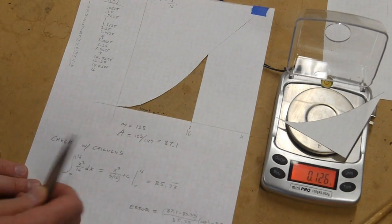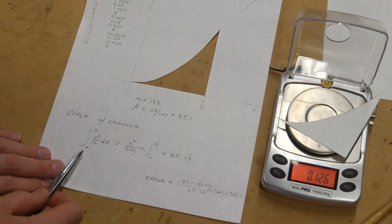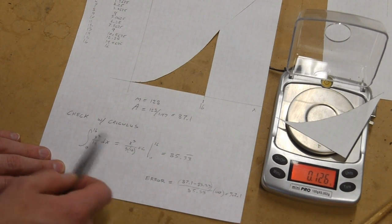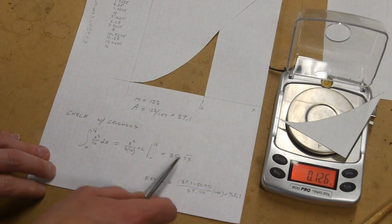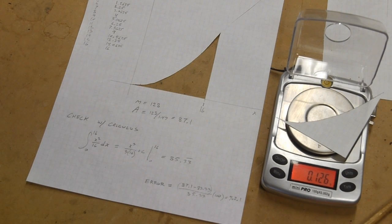So we check the mass and we divide and we get 87.1. And in this case, there's no easy geometric way to get the area of this, so we go straight to calculus to check it. And we have x cubed over 3 times the 16, which is the original plus a constant. And we evaluate all that. And we're still within about 2.1 percent of the real value.